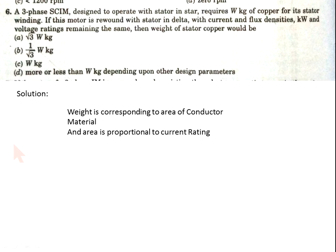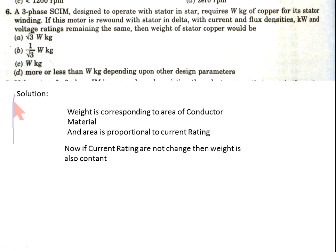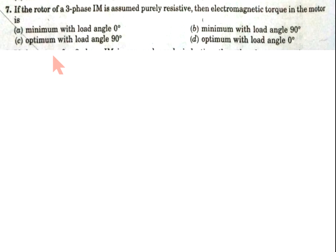Solution: Weight corresponds to the area of conductor material, and the area is proportional to the current rating. If the current rating is not changed, then the area is also not changed. If the area is not changed, then the weight is also not changed. So option C is correct.